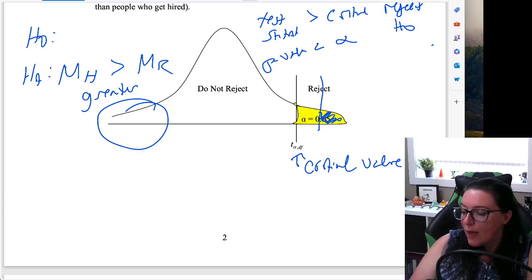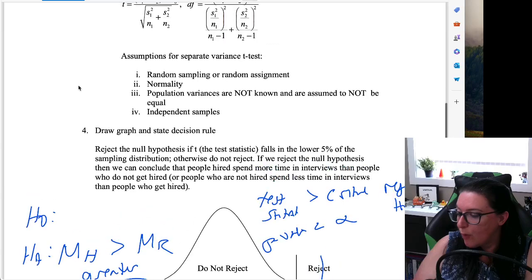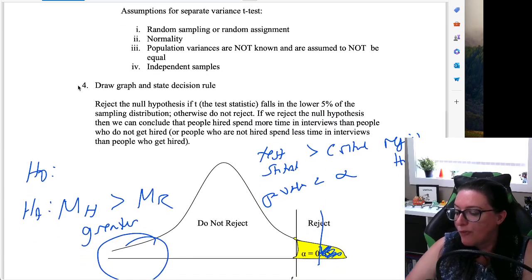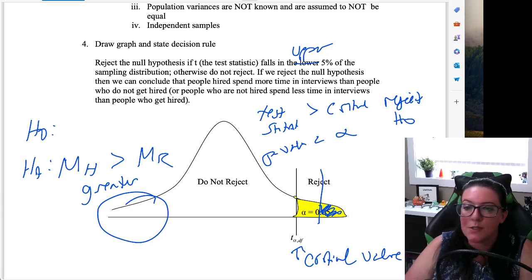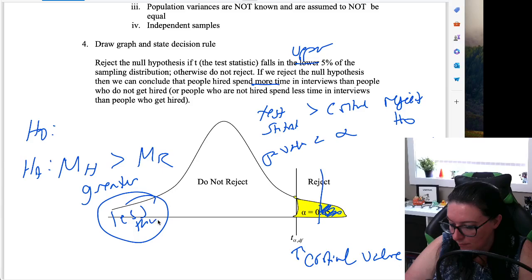Okay, so we get our test statistic and compare it to our critical value, or we compare our p-value to our alpha. So we will reject the null hypothesis if the t-statistic falls in the upper 5% of the sampling distribution. Otherwise, do not reject. If we reject the null hypothesis, then we can conclude that people hired spend more time, that's the greater than part, this would be a less than, than people who do not get hired.